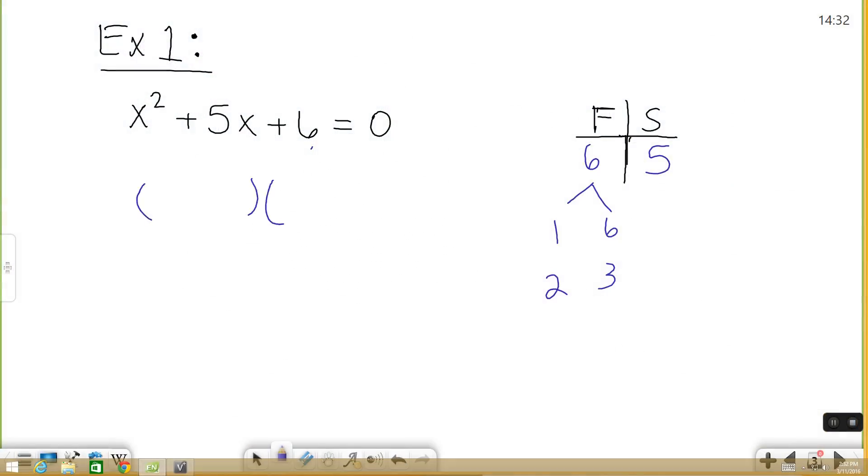So we have our factors. x and x will always be the first term in your factors, and the numbers you just found are going to be the other term. So we have a positive 2 and a positive 3. The signs kind of fill in themselves. Set each of these parentheses equal to 0 and solve, and those will be your solutions.